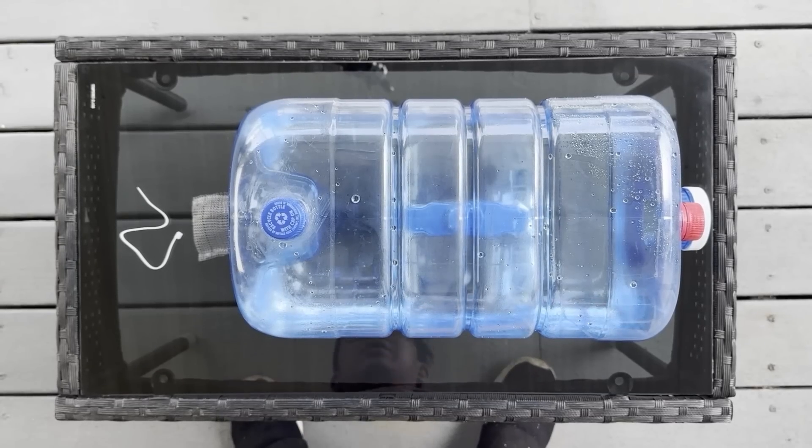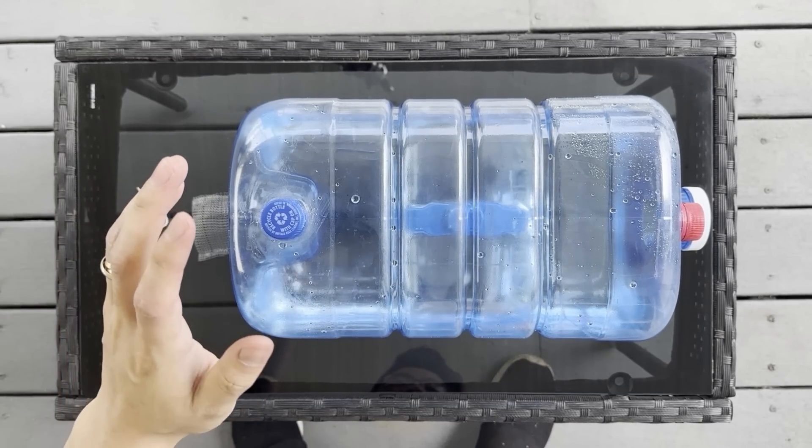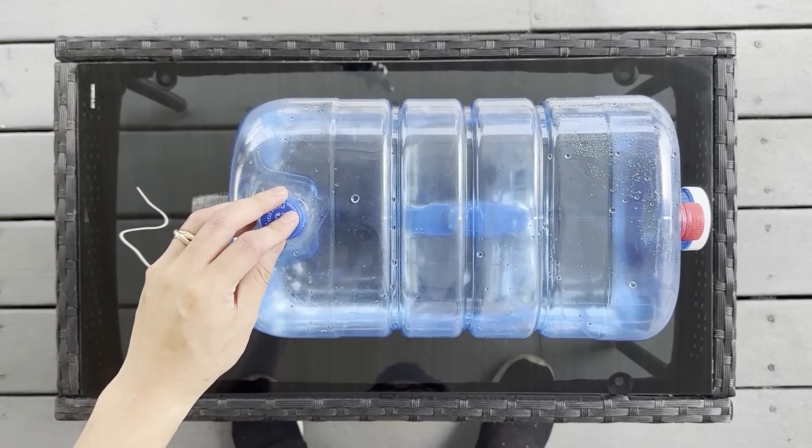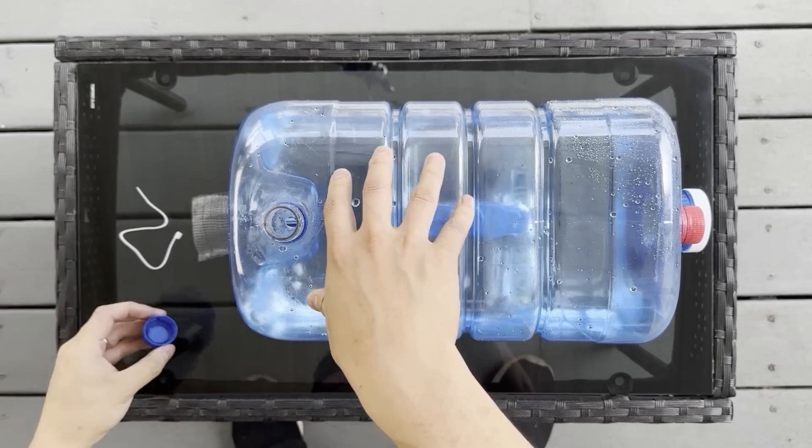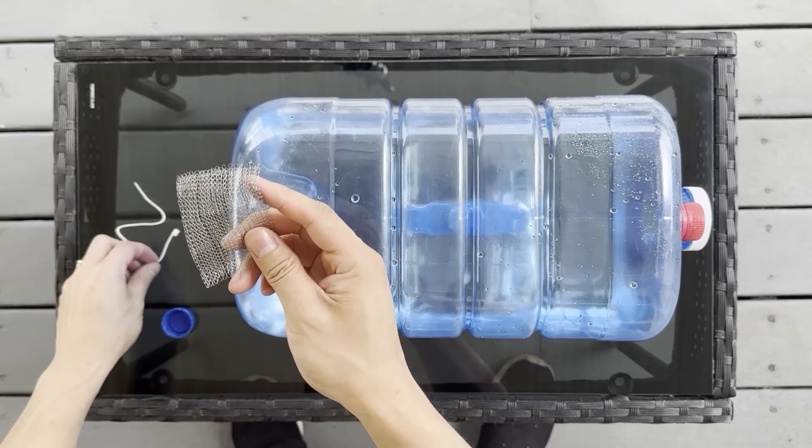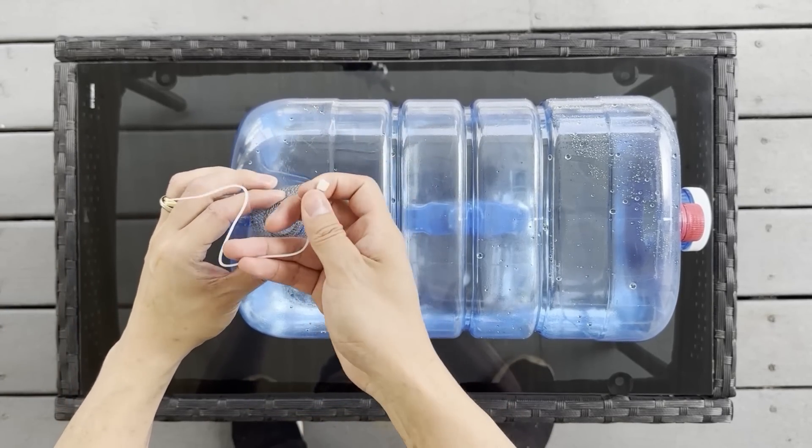The next step is to install the mesh guard for the bottom cap. The purpose of this mesh is to prevent any debris that could block the flow of water, and most importantly, any curious bee from climbing inside the jug. So what you want to do is with the bottom cap facing up, mold the mesh around the bottom and secure it with a zip tie.